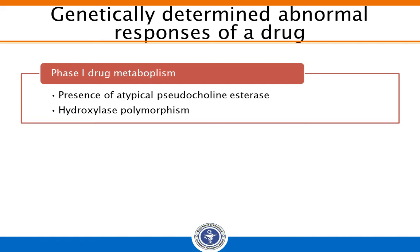Another example is hydroxylase polymorphism. Normally, phenytoin is hydroxylated and oxidized by mixed-function oxidases. In slow hydroxylators, phenytoin toxicity increases. The defect is transmitted as an autosomal recessive trait. Some drugs affected by this system include tolbutamide, fenformin, and nifedipine.